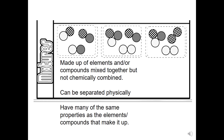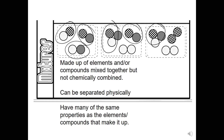For a mixture, you can have a mixture of compounds, a mixture of elements, or a mixture of elements and compounds. A mixture is made up of elements and/or compounds that are not chemically combined — they're just hanging out next to each other with no bond. They can be separated physically, and they keep the same properties as before — the M&Ms are still going to taste like M&Ms.